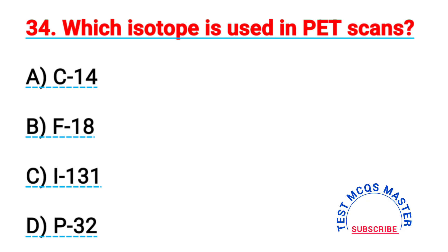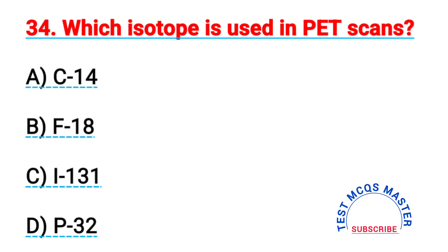Question number thirty-four: which isotope is used in PET scans? The right answer is B, fluorine-18 (F-18).